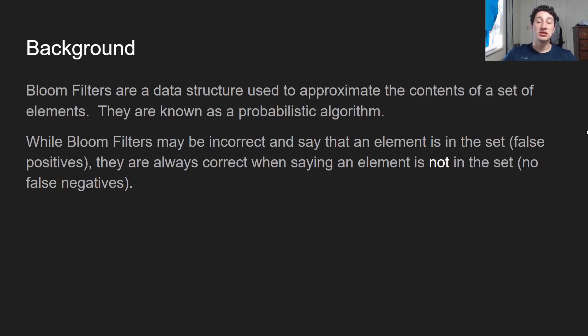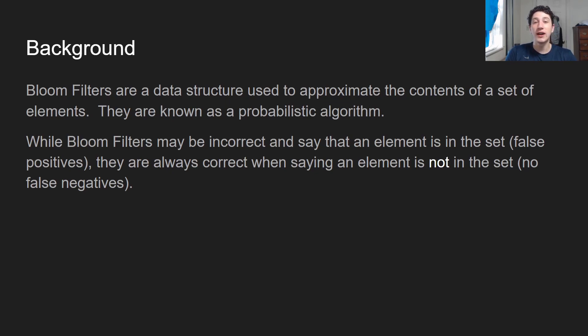So anyway, let's go ahead and look into Bloom Filters, because this is something I've mentioned for a while and I'd kind of be a hypocrite if I just talked about them all the time and never explained how they actually worked. Basically, Bloom Filters are just another data structure that you use to approximate the contents of a set. They're a probabilistic algorithm that will tell you conclusively if something is not in the set — so you don't ever have to worry about false negatives. But Bloom Filters may say an element could be in the set, so you may have to do a little bit of unnecessary work to find out if it's actually in there.